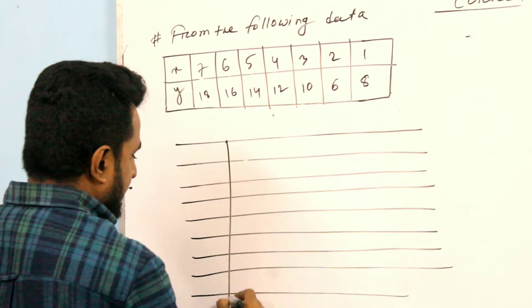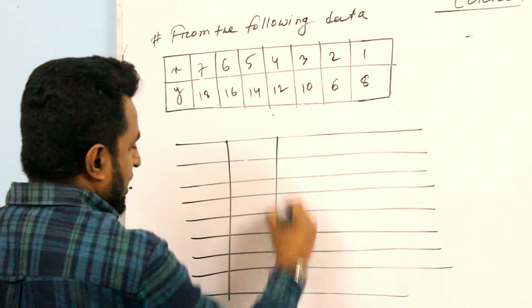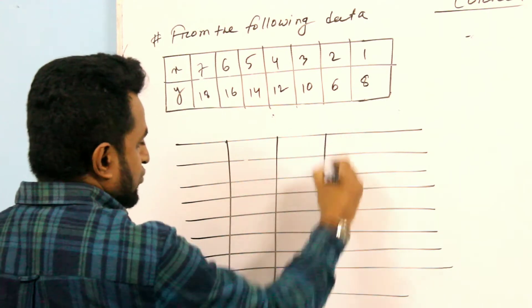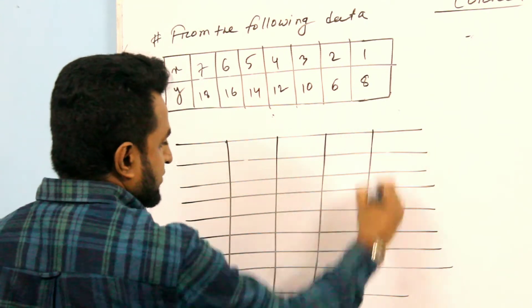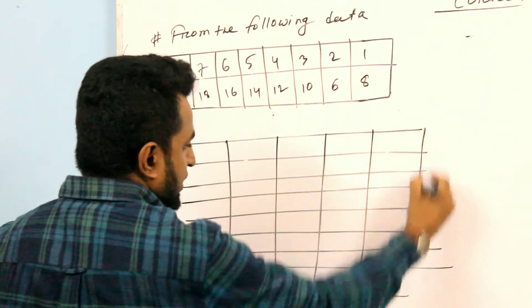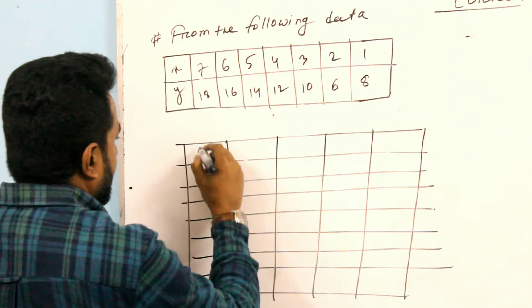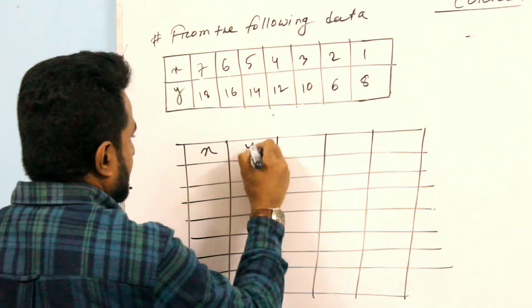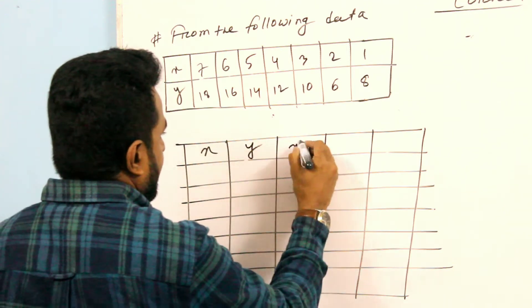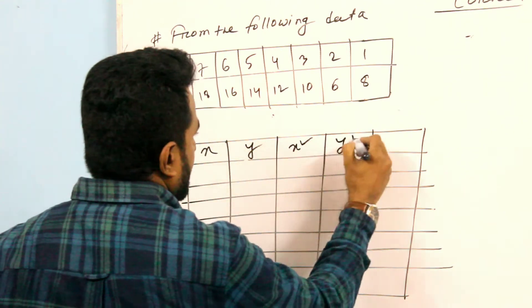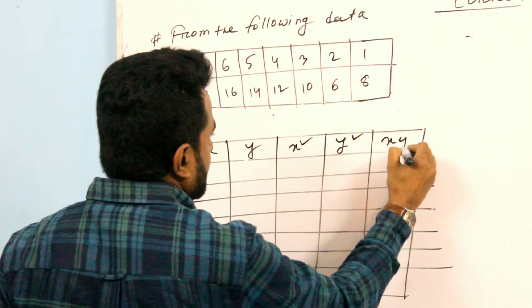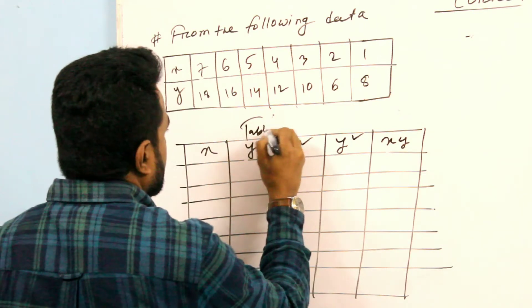We prepare a table with columns: X, Y, X squared, Y squared, and XY. This is an open table for calculation.